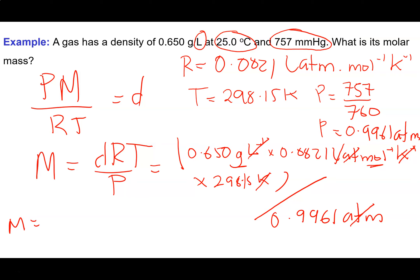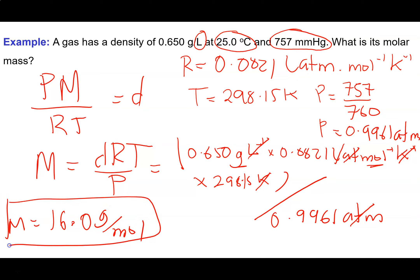When calculating a molar mass, the important thing to recognise is that it has to be bigger than 2.02. In this case, rounding to three significant figures, the molar mass ends up being 16.0 grams per mole. There are a variety of possible gases with this molar mass — that's a good example of doing one of these calculations.